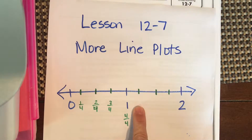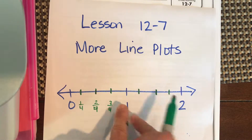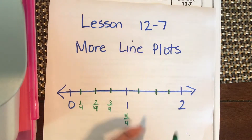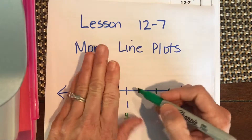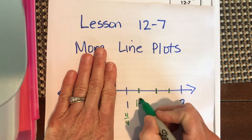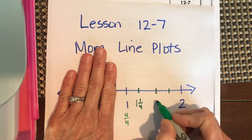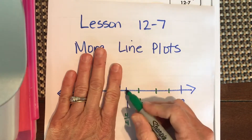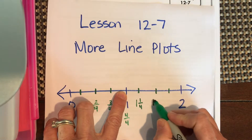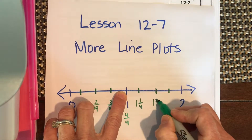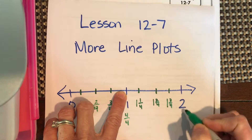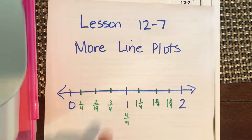We know this point is five-fourths, but we want to express it the new way we learned: as a mixed number. We can kind of ignore the improper fraction. So past whole number one, we have one and one-fourth, one and two-fourths, one and three-fourths, and then whole number two.